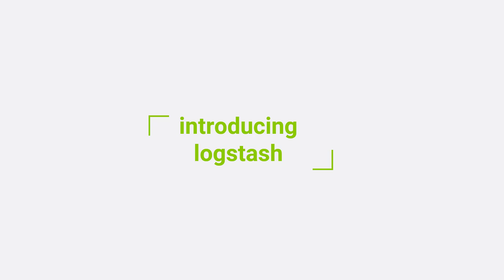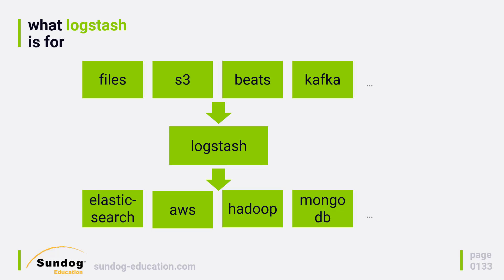We can't really talk about importing data into Elasticsearch without talking about Logstash. Basically it sits between your data and where you want to put it, and commonly that will be between a log file being generated on a web server somewhere and Elasticsearch. But Logstash is actually much more flexible than that — it can import data from pretty much anywhere. It doesn't have to just be local files; it could be coming from some other system entirely like Kafka, or a distributed file system like S3 or HDFS.